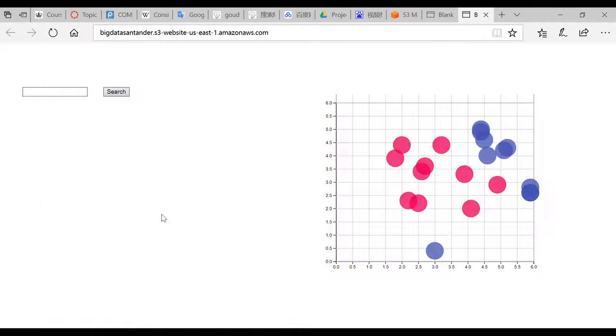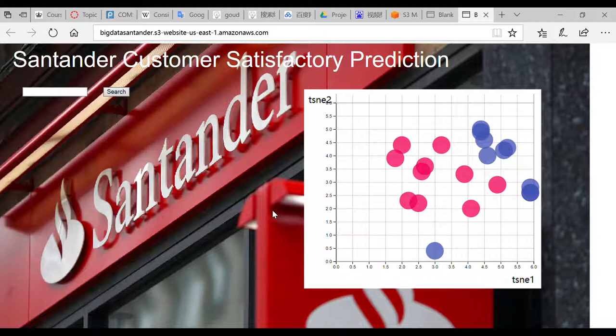This graph is a two-dimensional visualization of TSNE features of 20 randomly chosen customers. The red spots represent satisfied customers, and the blue ones represent unsatisfied customers.